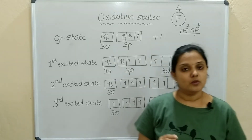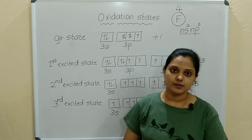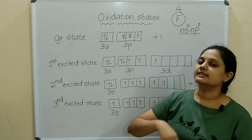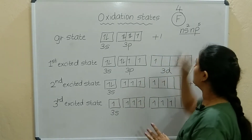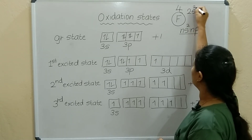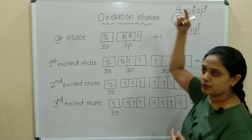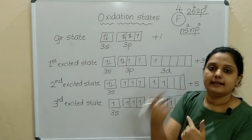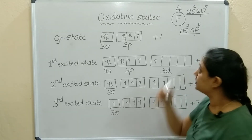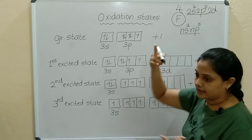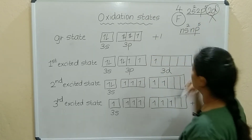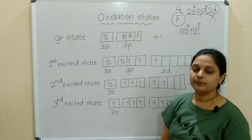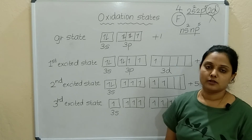Fluorine is the most electronegative and will show only minus 1 oxidation state. Moreover, fluorine cannot make electrons jump — its electronic configuration is 1S² 2S² 2P⁵. If you want to excite an electron from 2P, it should jump to 2D, but 2D does not exist. So due to non-availability of the D orbital, fluorine cannot show higher oxidation states.